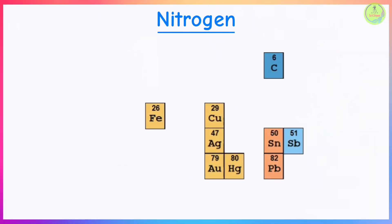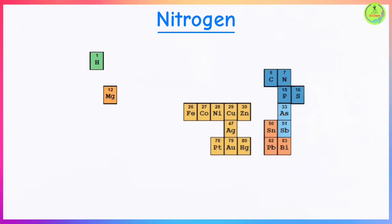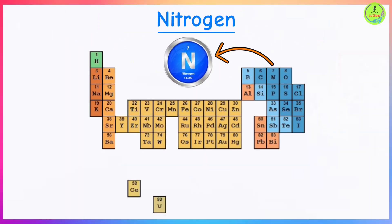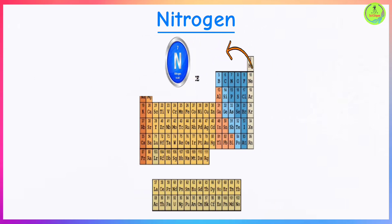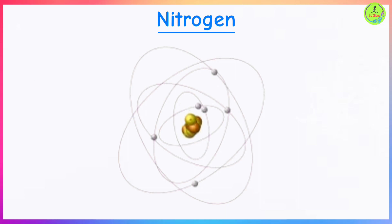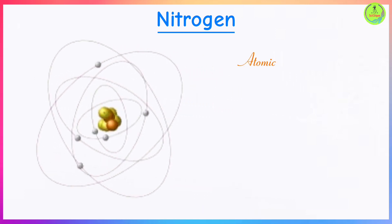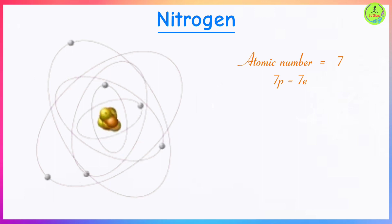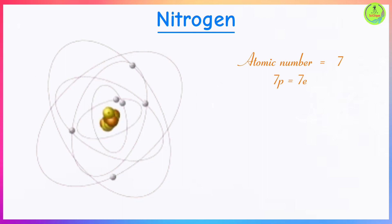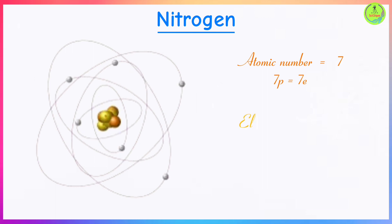Nitrogen is an element that belongs in Group 5 of the periodic table. It has an atomic number of 7, which means it has 7 protons in its atoms. The number of protons is always equal to the number of electrons in any atom, so nitrogen has 7 protons and 7 electrons.